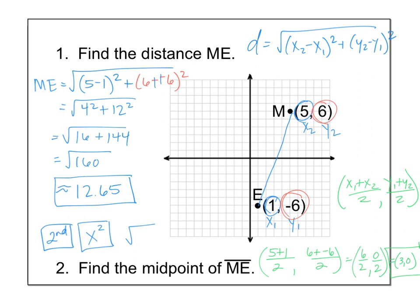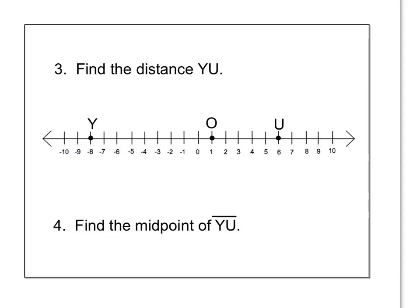Now, what I would recommend is checking to see if it looks right. So 3, 0 would be right 3 up 0. Does that look like the midpoint of that segment? I would say, yeah, it does. Cool. Go to the next one. Please pause the video and try numbers 3 and 4.